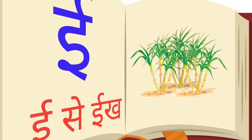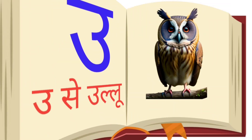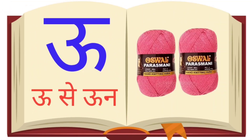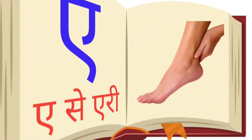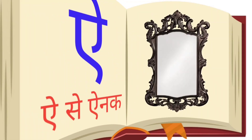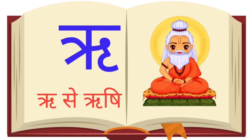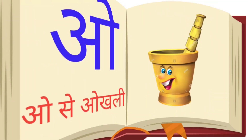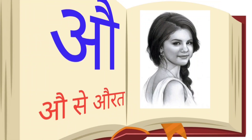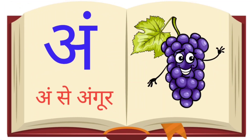ઈ સે ઇમલી, ઉ સે ઉલૂ, ઊ સે ઊન, એ સે એરી, ઐ સે આનાર, ઓ સે ઉખળી, ઔ સે આરત, અં સે અંગૂર.